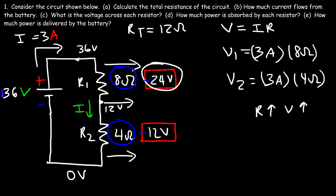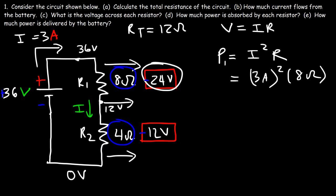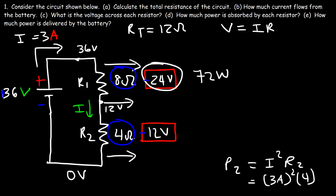Let's move on to part D: how much power is absorbed by each resistor? The equation I like to use is P equals I squared times R. The current is 3 amps, and for resistor 1 the resistance is 8 ohms, so it's 3 squared times 8 — that resistor absorbs 72 watts. For the second resistor, P2 equals I squared times R2: the current is still 3 amps and the resistance is 4 ohms, so 9 times 4 is 36 — this resistor consumes 36 watts.